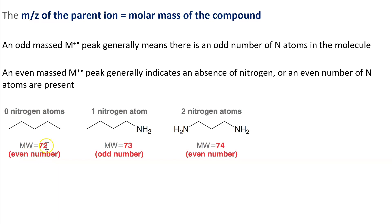So pentane has a molecular ion peak at 72. 72 is the molar mass of pentane. But one-butanamine has a molecular weight of 73, that's an odd number. But propanediamine has a molecular weight of 74 because it has two nitrogens.